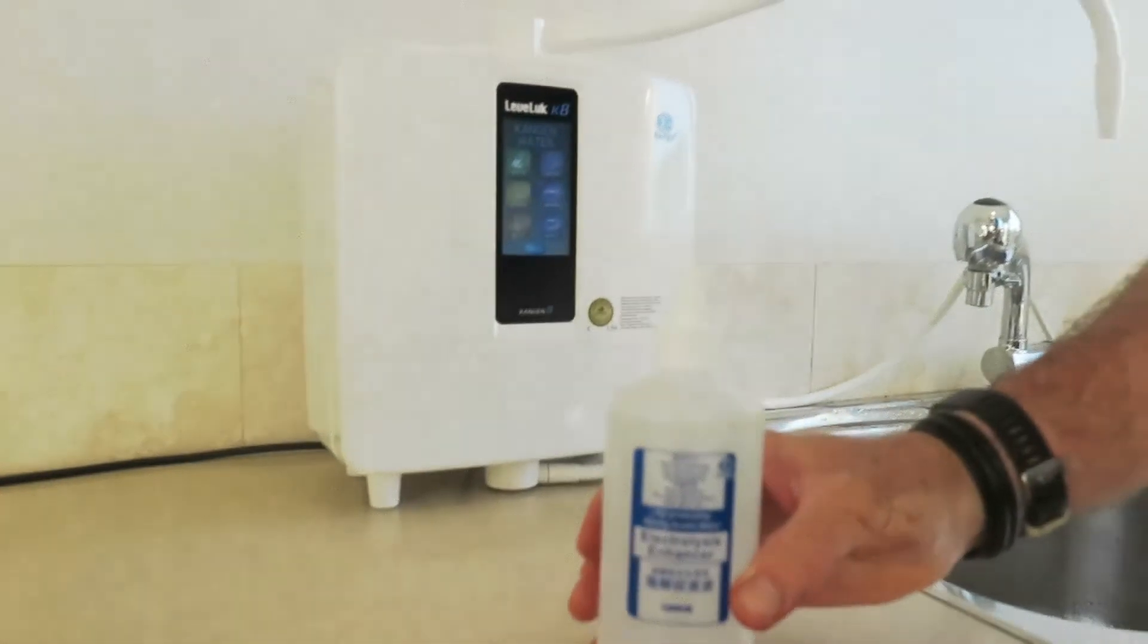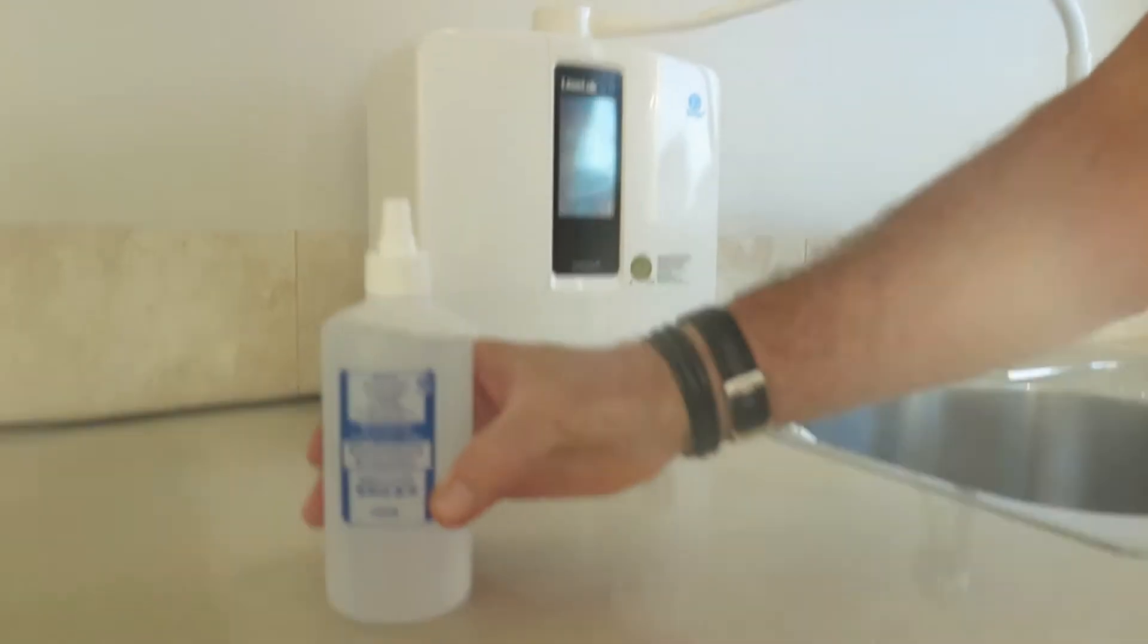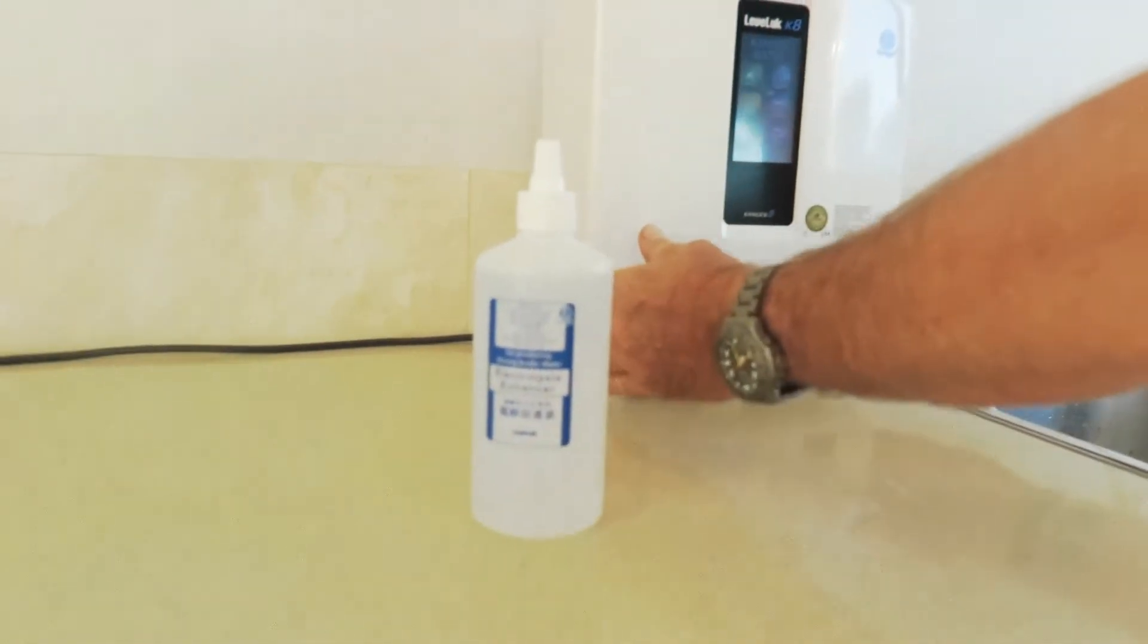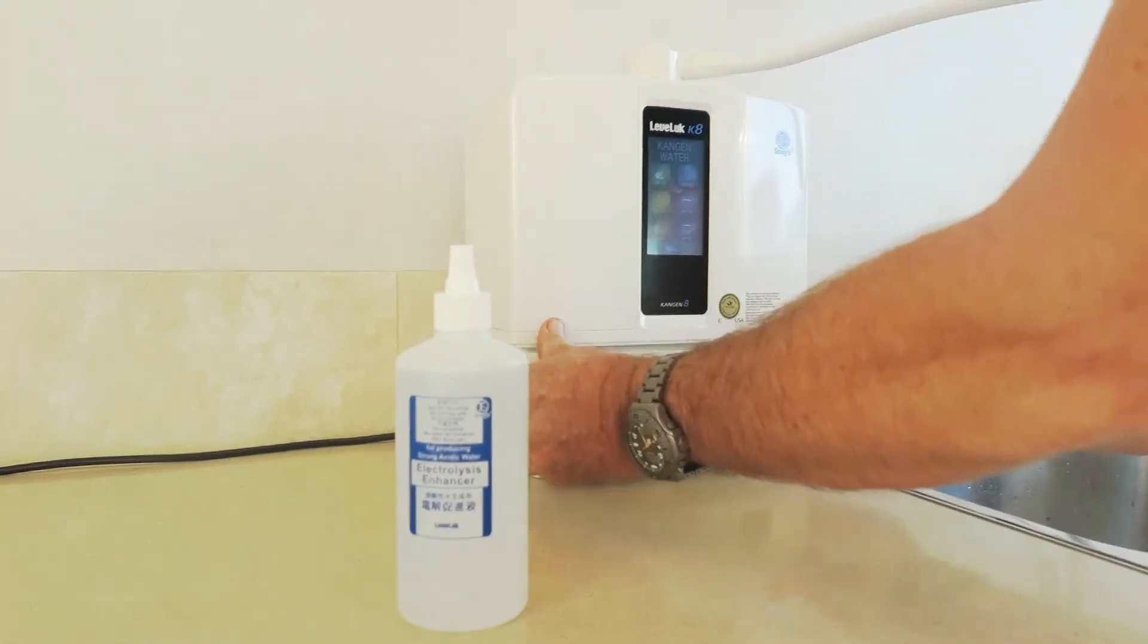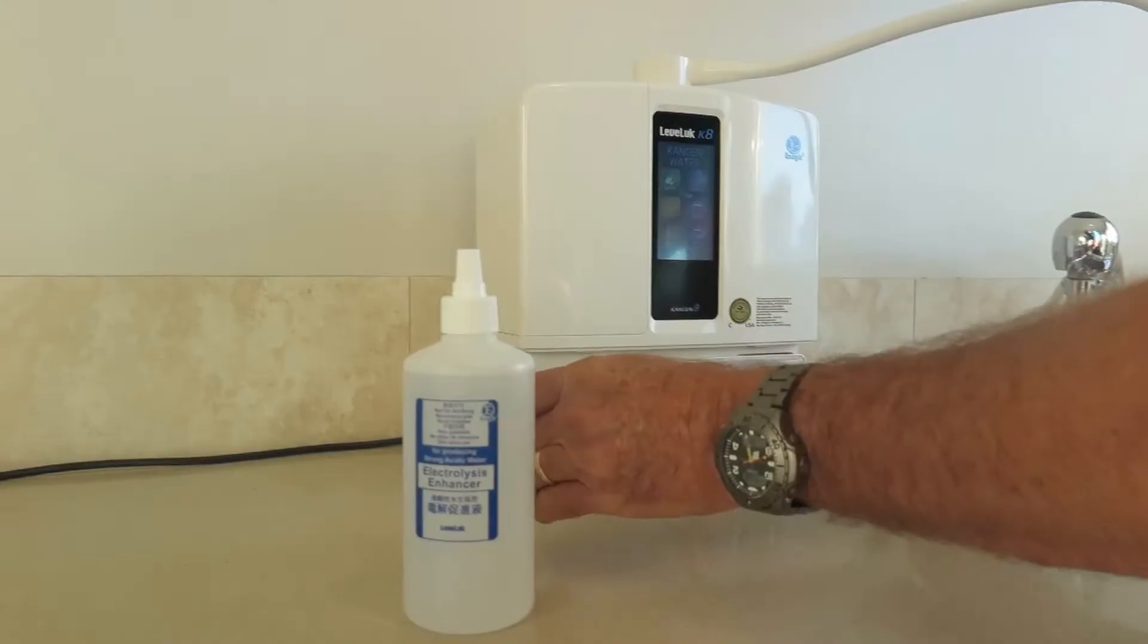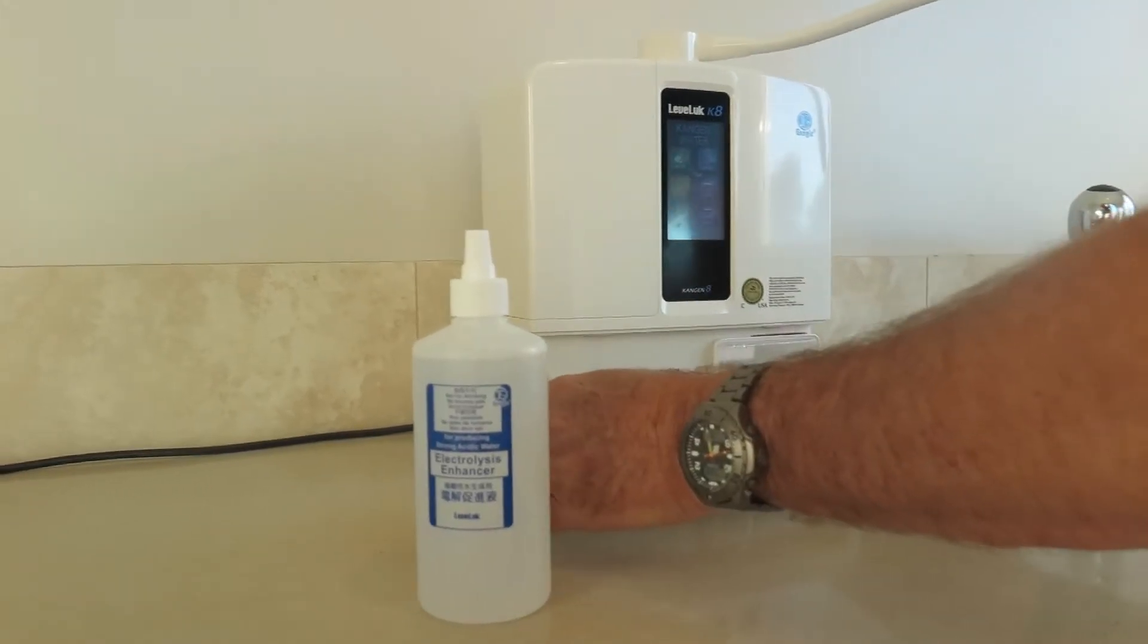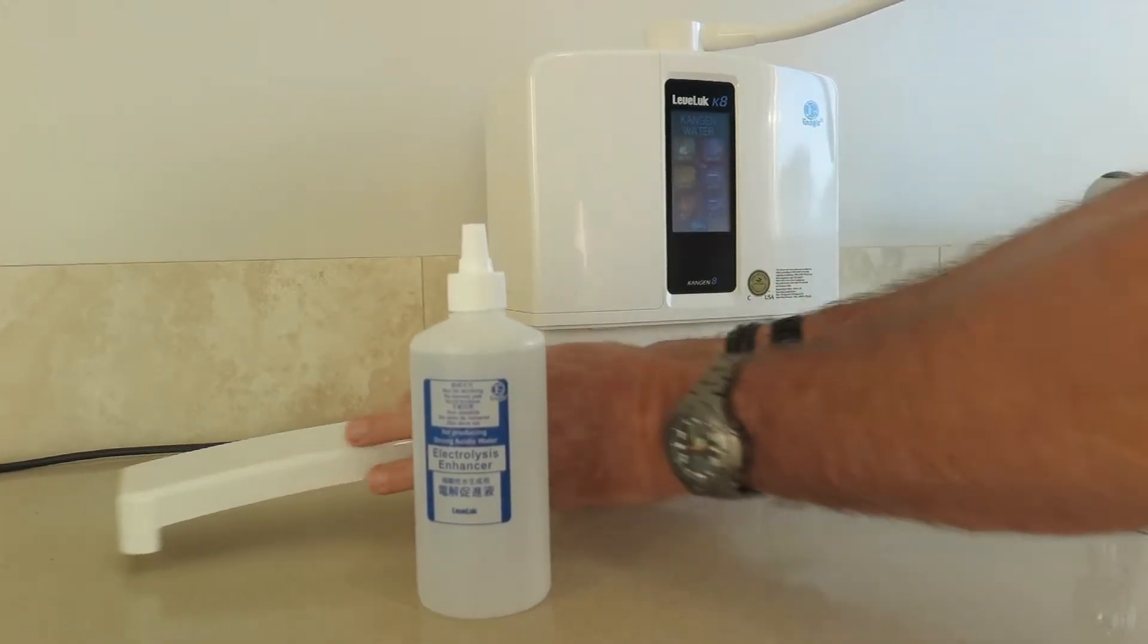All right everyone, only use the electrolysis enhancer that Enagic supplies. Nothing else will do - we don't want to forfeit our warranty. Gently take the bottom plate out of the K8 and move it aside.